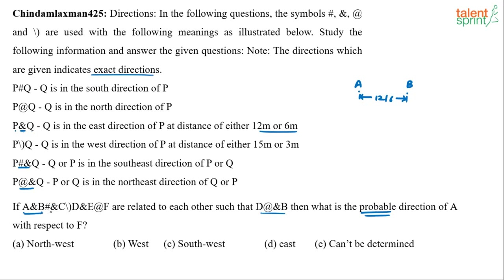Next, B hash-ampersand C. Hash-ampersand means the second person is in the southeast direction of the first, or vice versa — two possibilities. Either B is in the southeast of C, or C is in the southeast of B. So we get two cases: C1 where C is in the southeast of B, and C2 which is the other case.